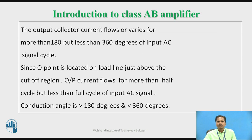Let us get acquainted with Class AB power amplifier. In Class AB power amplifier, each transistor in the amplifier circuit is biased in such a way that the output collector current flows or varies for more than 180 degrees but less than 360 degrees of input AC signal cycle. Since the DC operating point or Q-point is located on the load line just above the cut-off region, the output current for each transistor flows for more than half cycle but less than full cycle of input AC signal. Hence the conduction angle for each transistor is greater than 180 degrees and less than 360 degrees of input AC signal cycle.